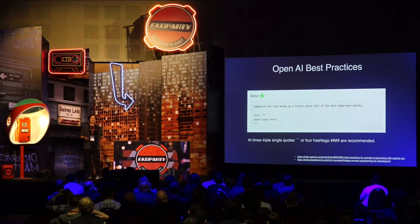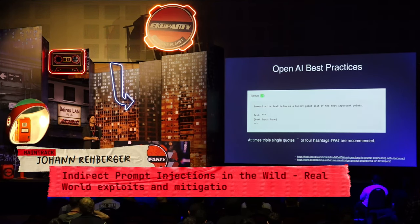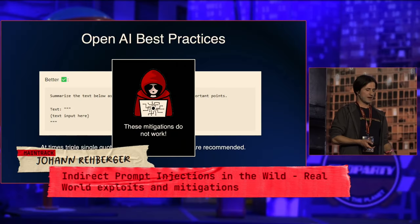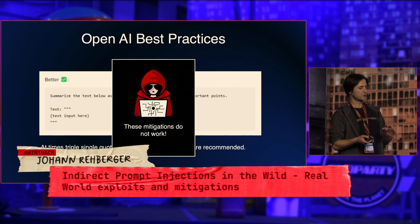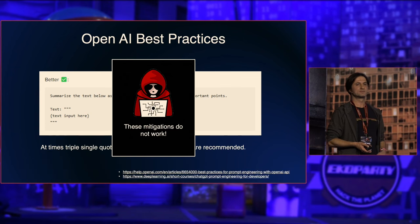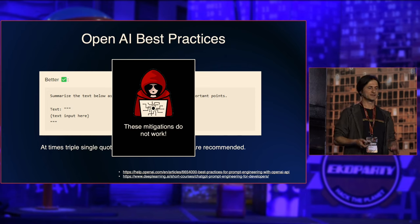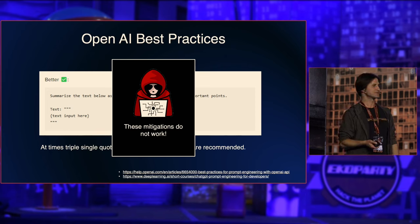OpenAI has best practices to make systems more robust — for example, using triple quotes or backticks. But robust versus secure is very different. An injection that exploits a security vulnerability is fundamentally different from merely making a system more robust.